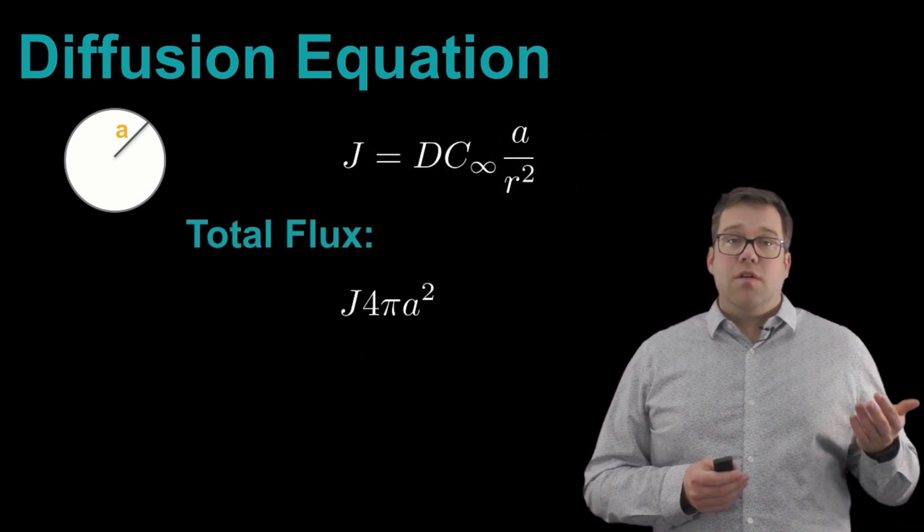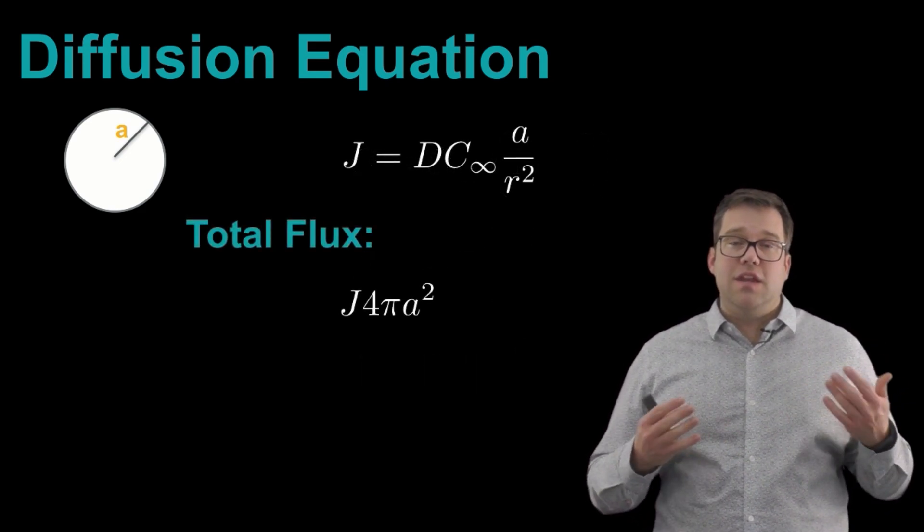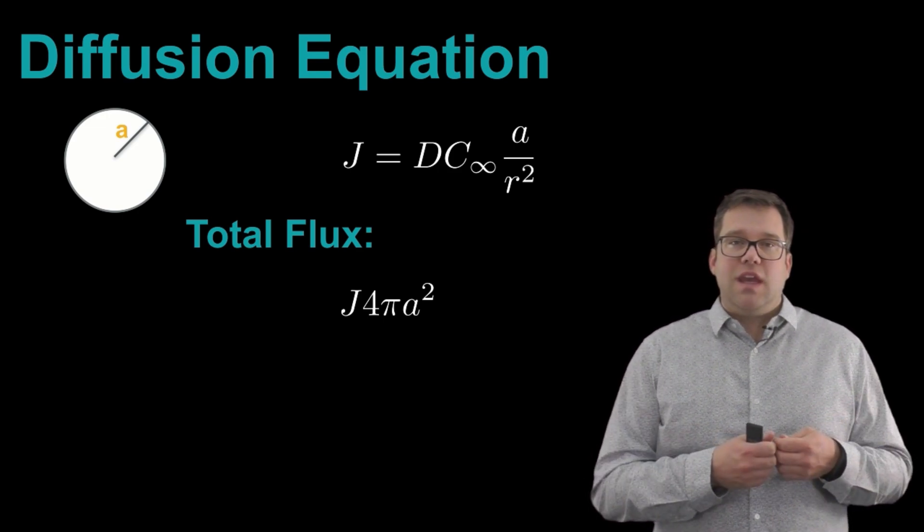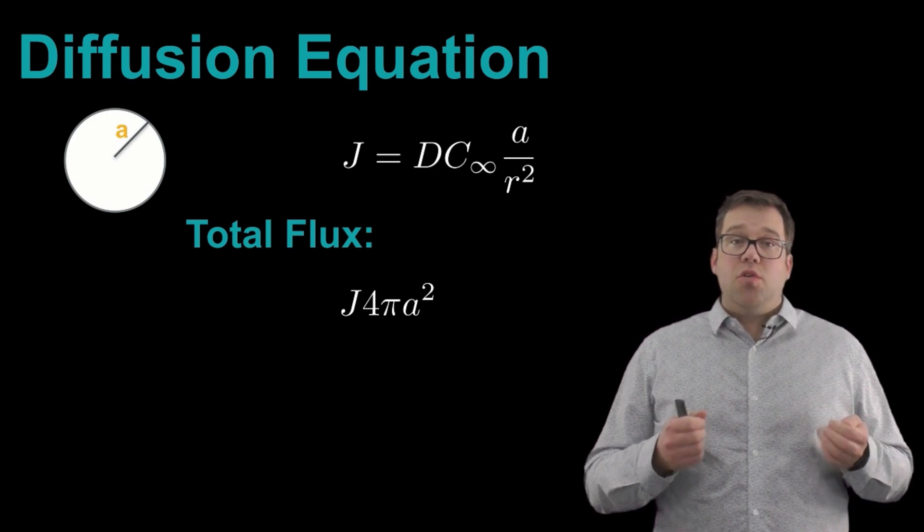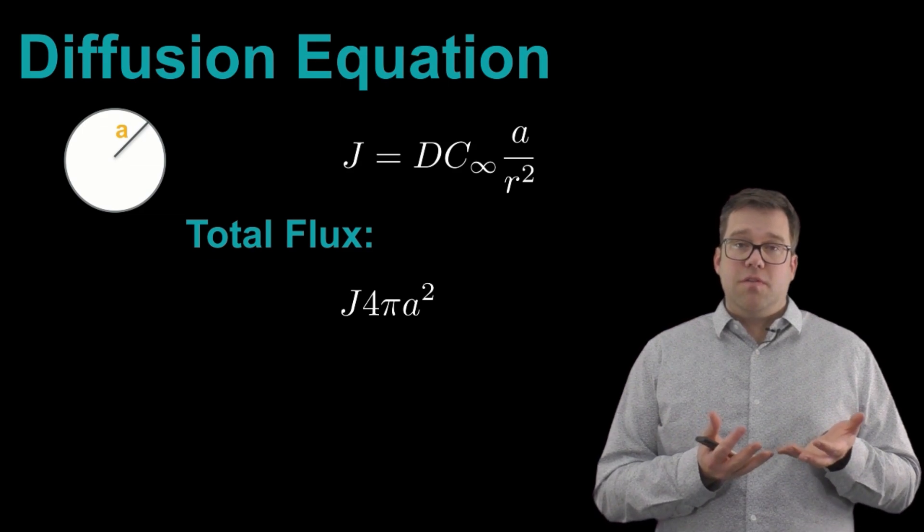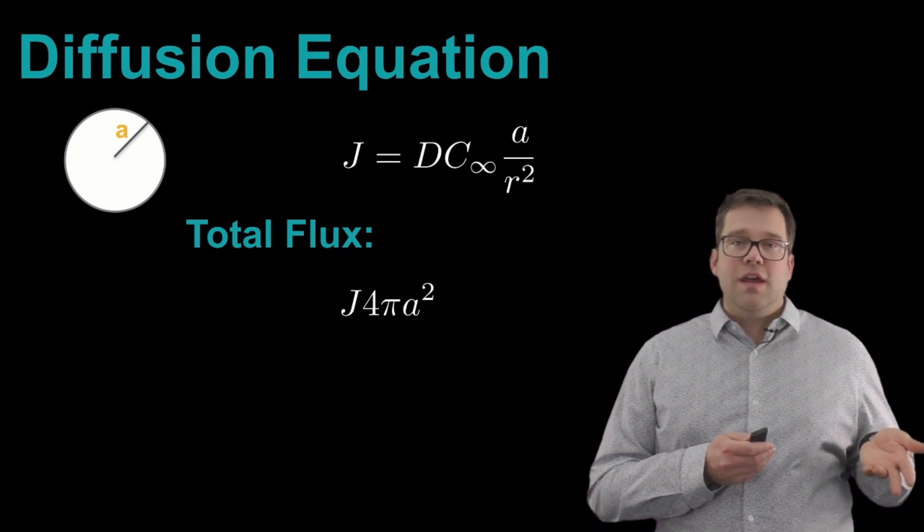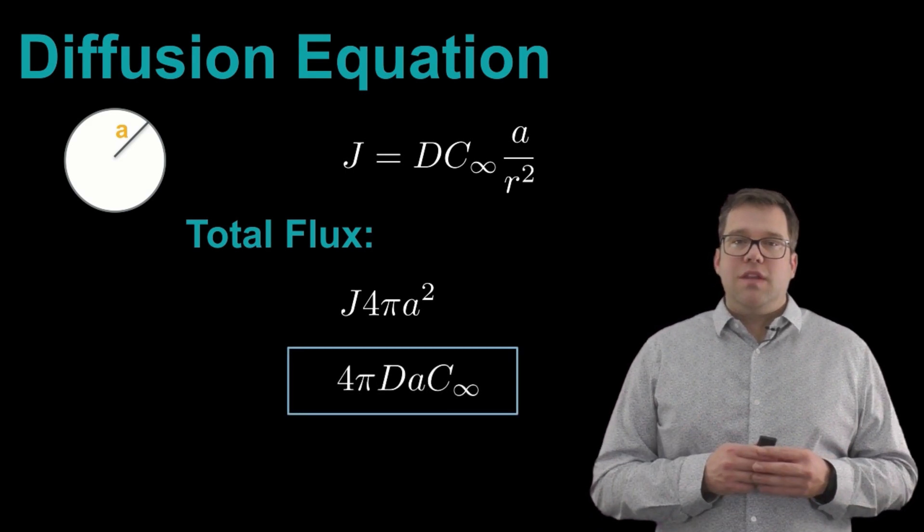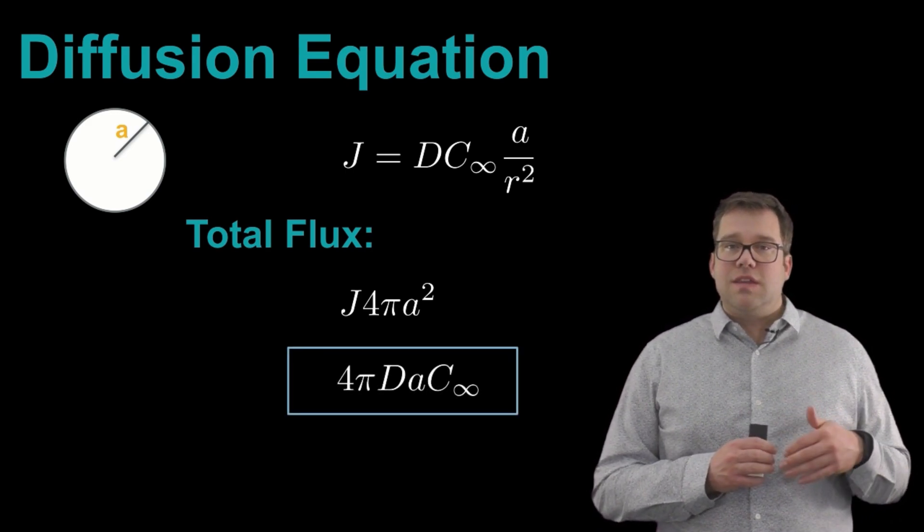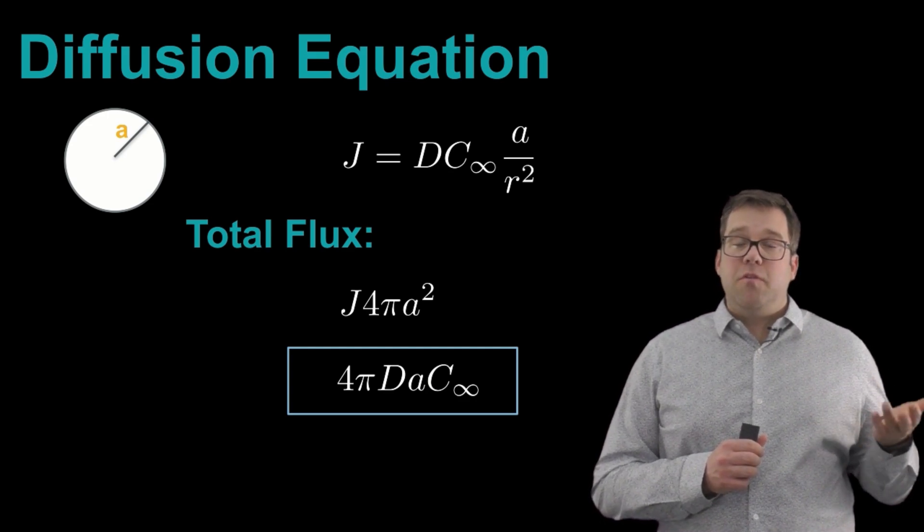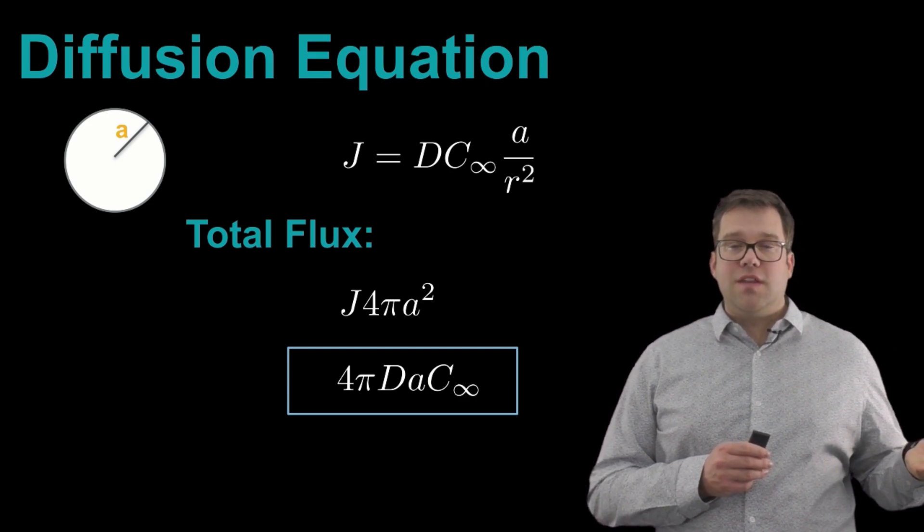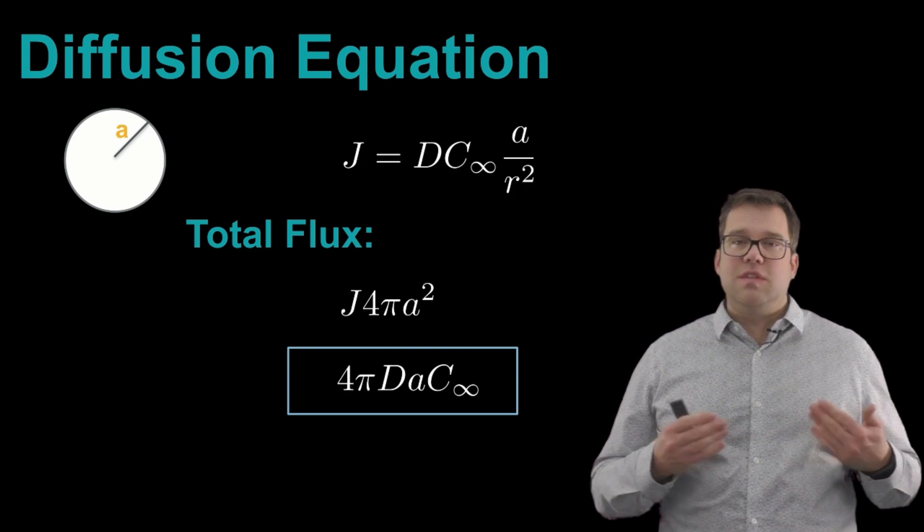We can further solve for the total flux making it to the surface of the cell by saying that that should be the total flux integrated over the total surface area or just the total flux times the surface area, which is 4 pi a squared. And putting these two things together, what we find is that this total flux is just 4 pi times the diffusivity constant times the cell radius times this background concentration.